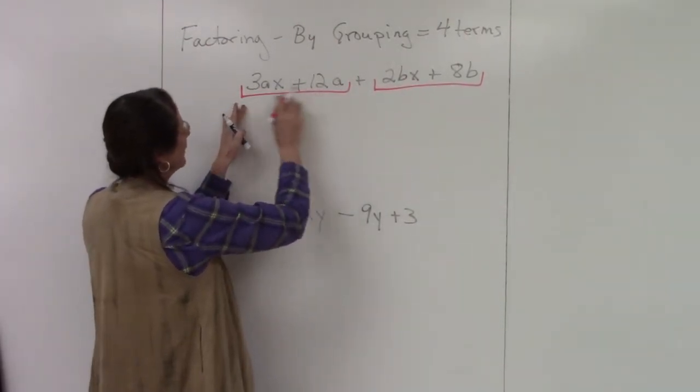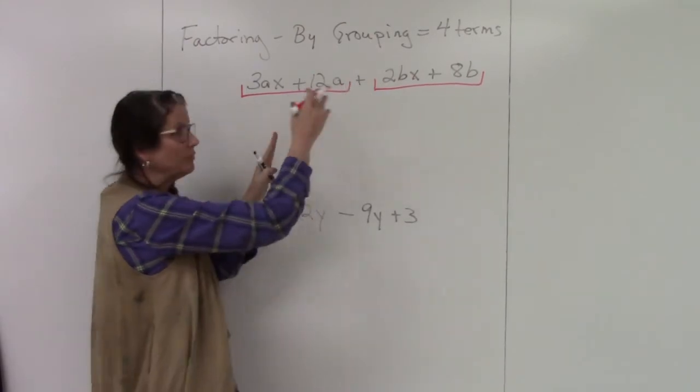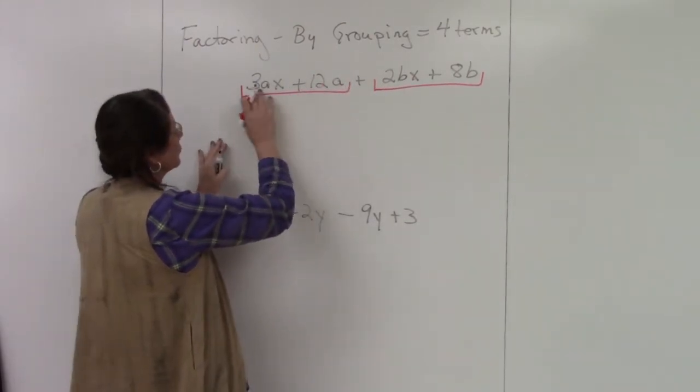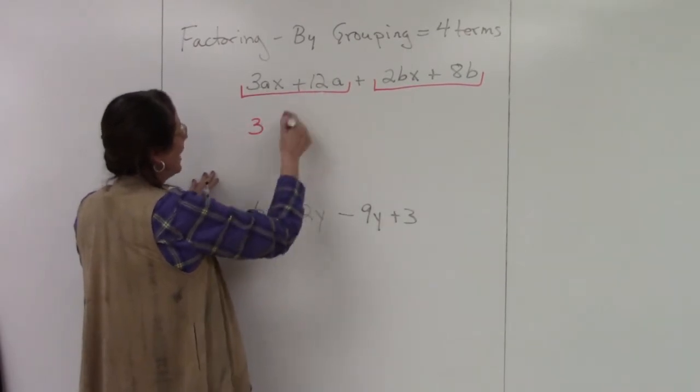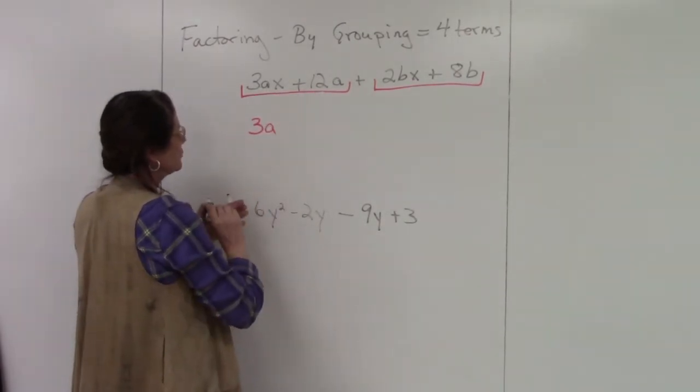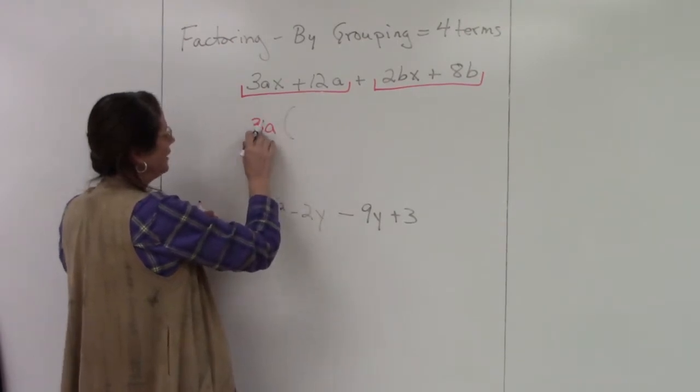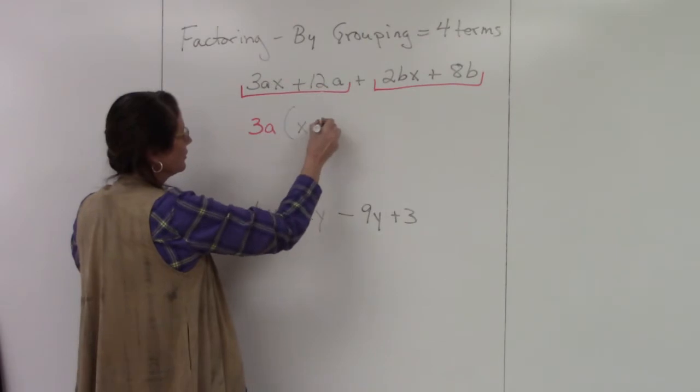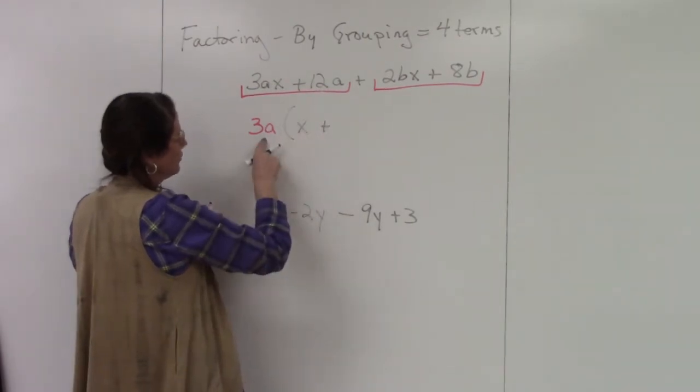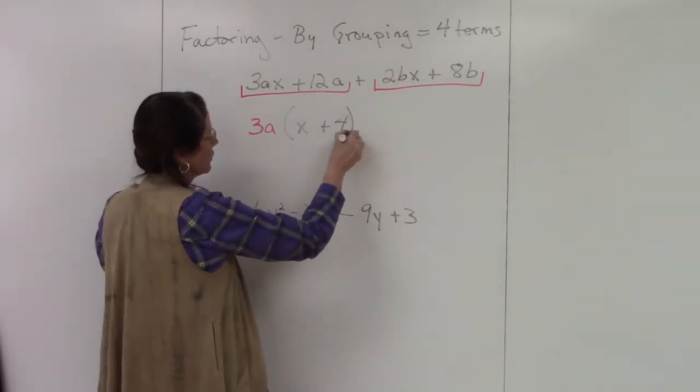I look at my first two. What's in common? Greatest common factor. Look at my numbers: 3 and 12. 3 is in common. I also have an a in common, so 3a is what's in common. When I divide 3a out, I have an x left. 12a divided by 3a is just 4.